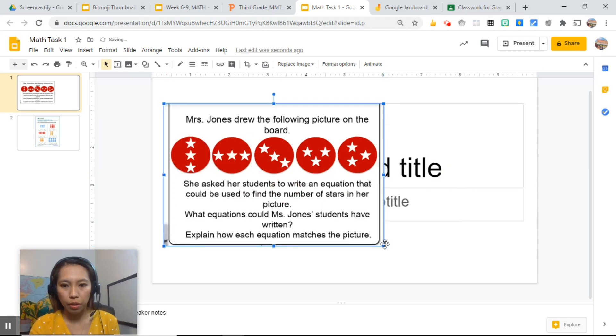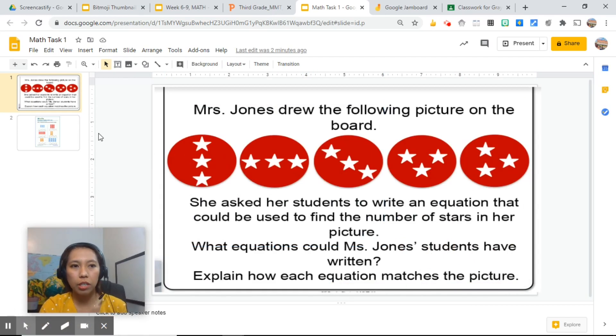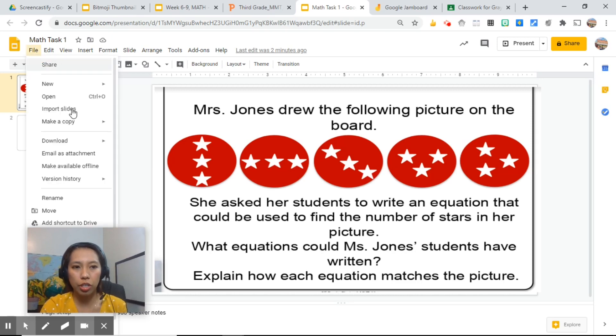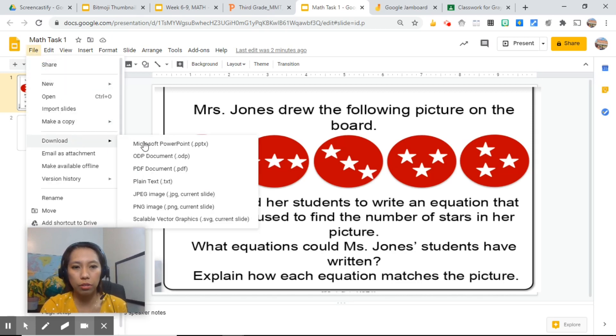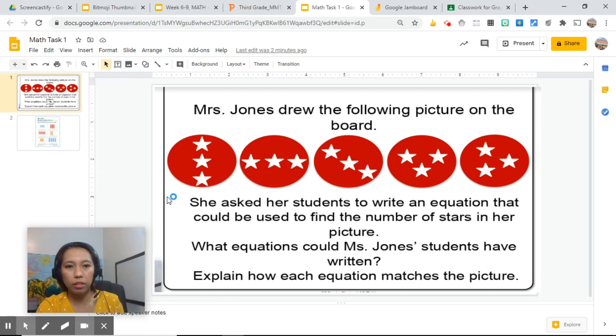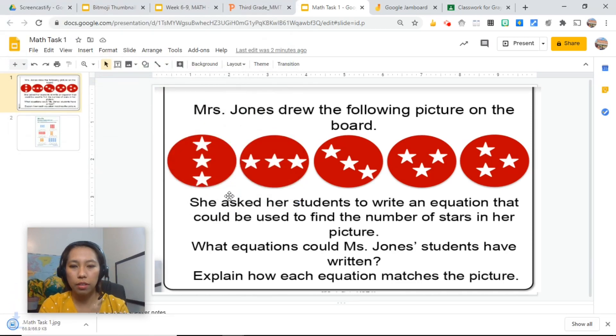And then we can crop this one to get just what we need, and then just position it to occupy the whole space. Once you are done cropping your image, you save this as a JPEG file. Go to download, save as JPEG, save. Now it's in your computer.